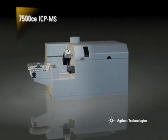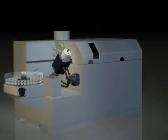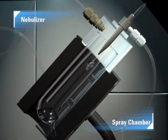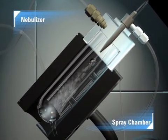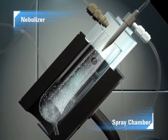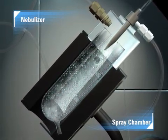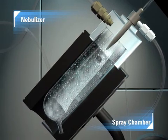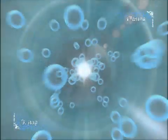Let's follow the journey a sample takes from its sample vial through the ICP-MS to the detector. Sample is pumped from the sample vial into the nebulizer, where it is mixed with argon gas to form an aerosol. Larger droplets are removed from the sample aerosol as it passes through the cooled spray chamber, and the fine aerosol is swept into the central channel of the plasma.